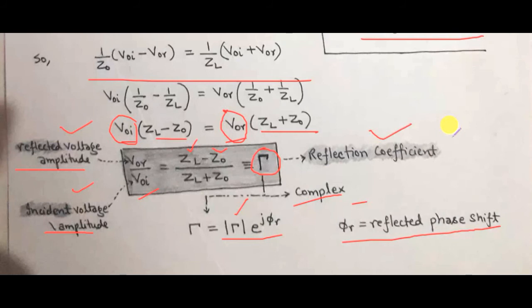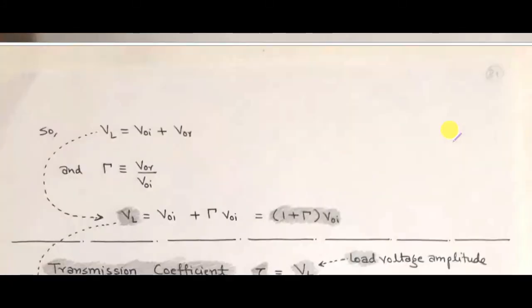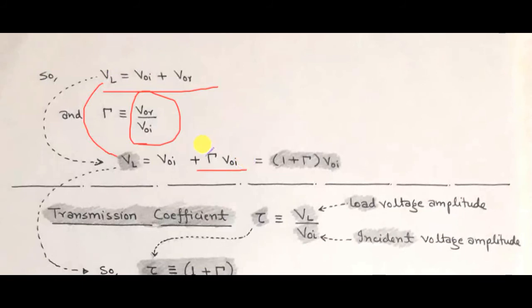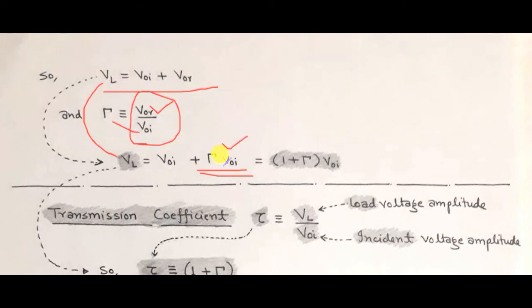The reflection coefficient Tau is the ratio of the reflected voltage amplitude to the incident voltage amplitude. Using this, we can write the load voltage in terms of the reflection coefficient: V_L = V_naught_I + Tau·V_naught_I, since V_naught_R = Tau·V_naught_I. Taking V_naught_I as common, the load voltage equals (1 + Tau) times V_naught_I.